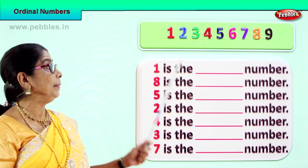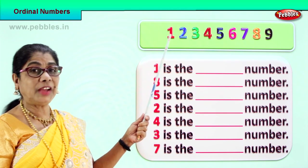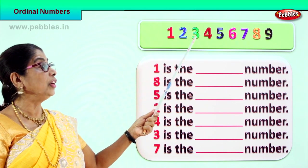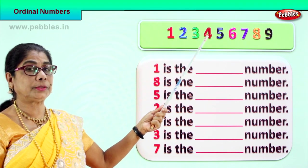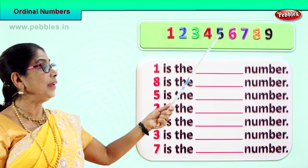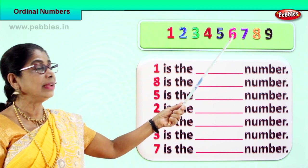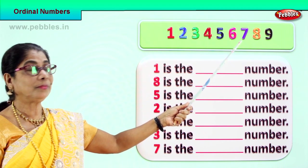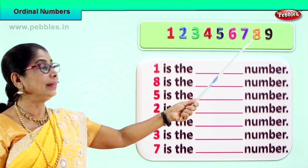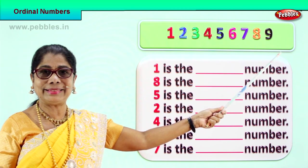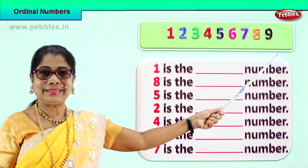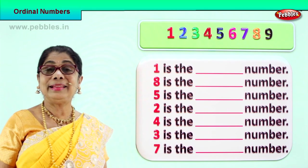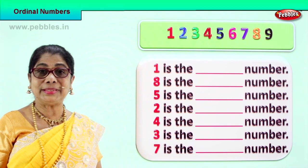Sit with me. First, second, third, fourth, fifth, sixth, seventh, eighth, ninth. So we have first to ninth — nine numbers here.